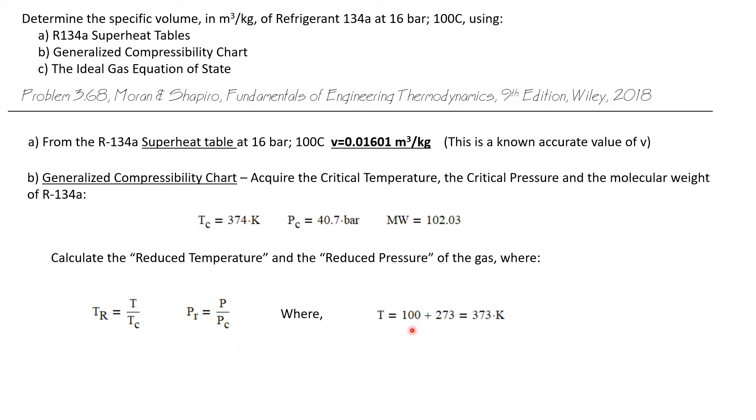So the temperature in this case is 100 degrees C plus 273, which gives us 373 degrees Kelvin. So let's calculate the reduced temperature and pressure. The reduced temperature is 373 degrees Kelvin divided by 374 degrees Kelvin, we'll take that as a value of one. And the reduced pressure is 16 bar divided by 40.7 bar, which is a value of 0.39.